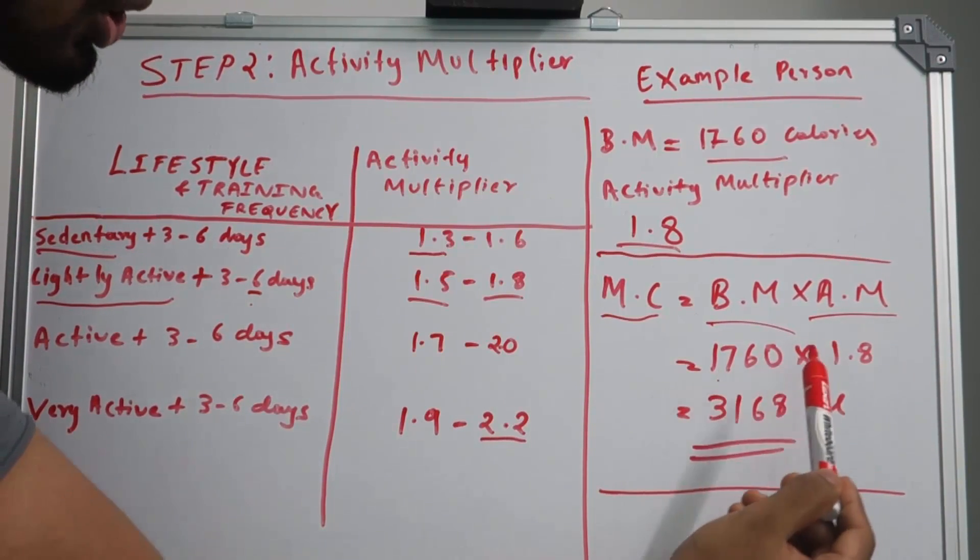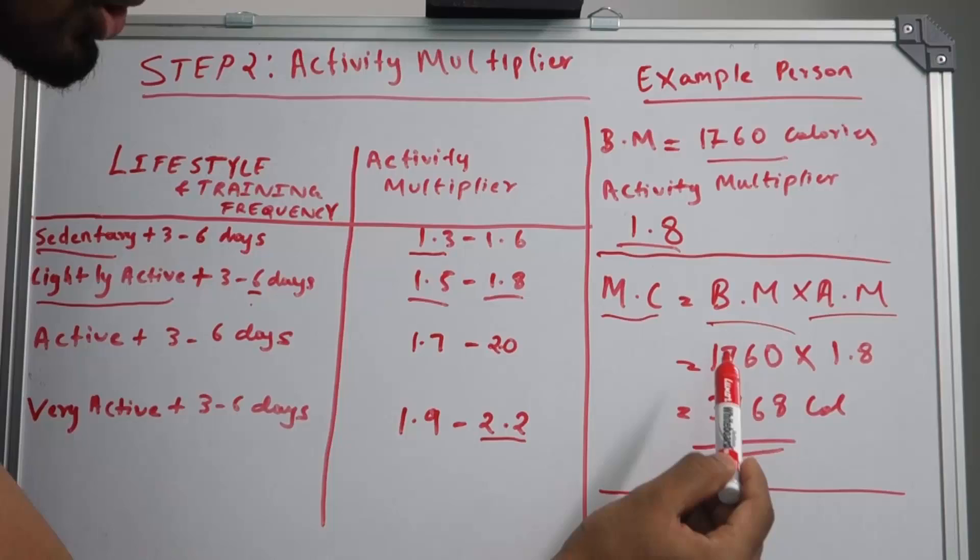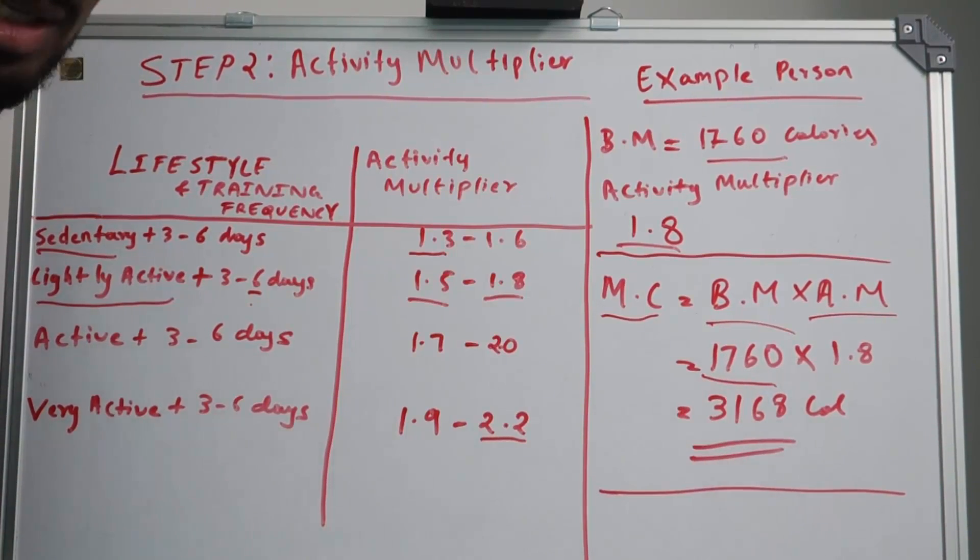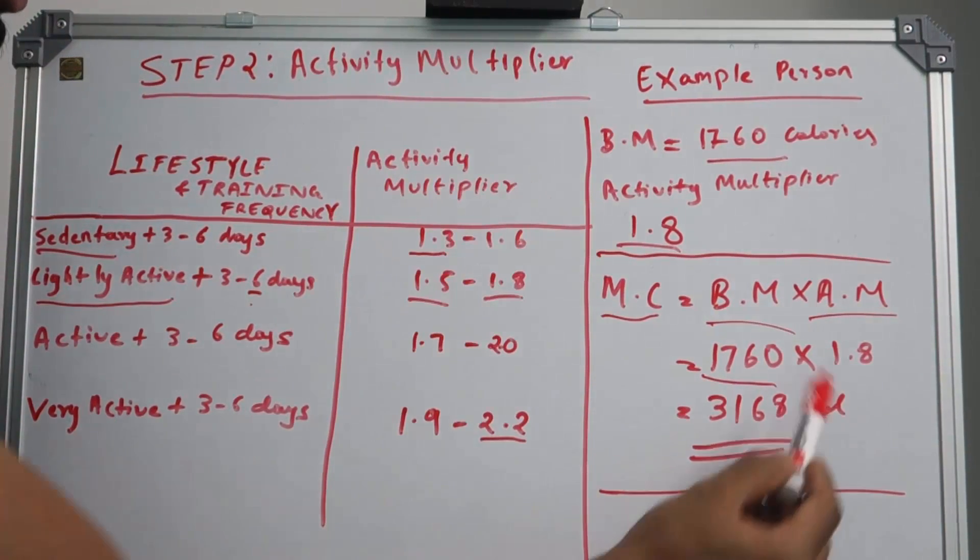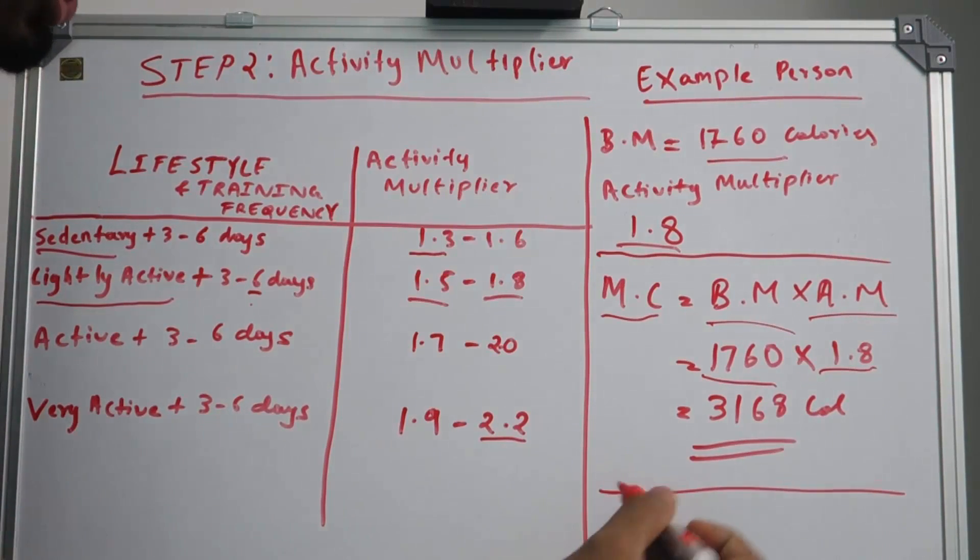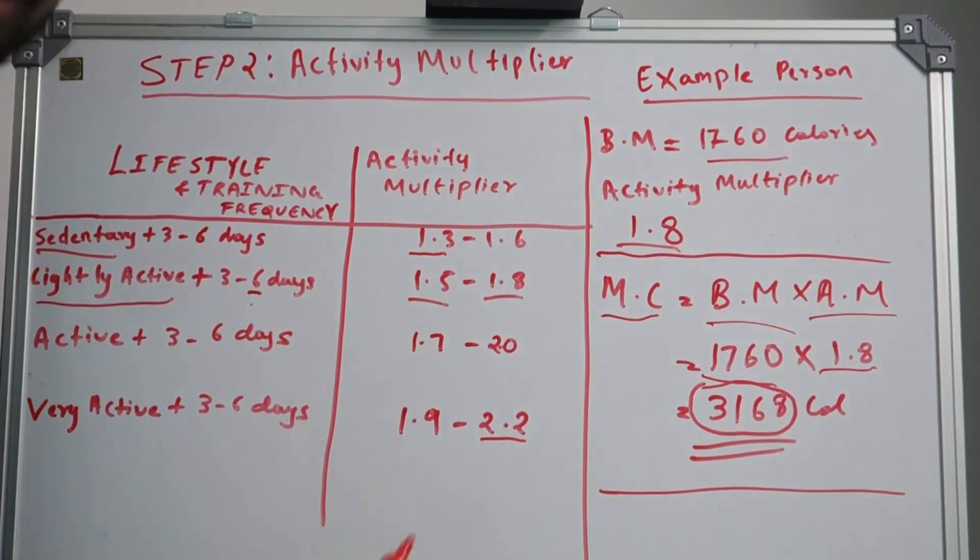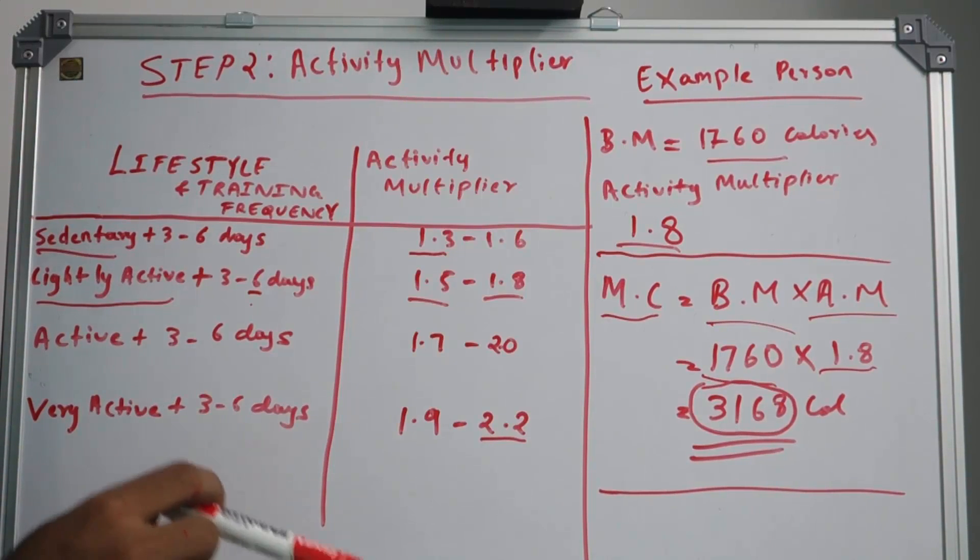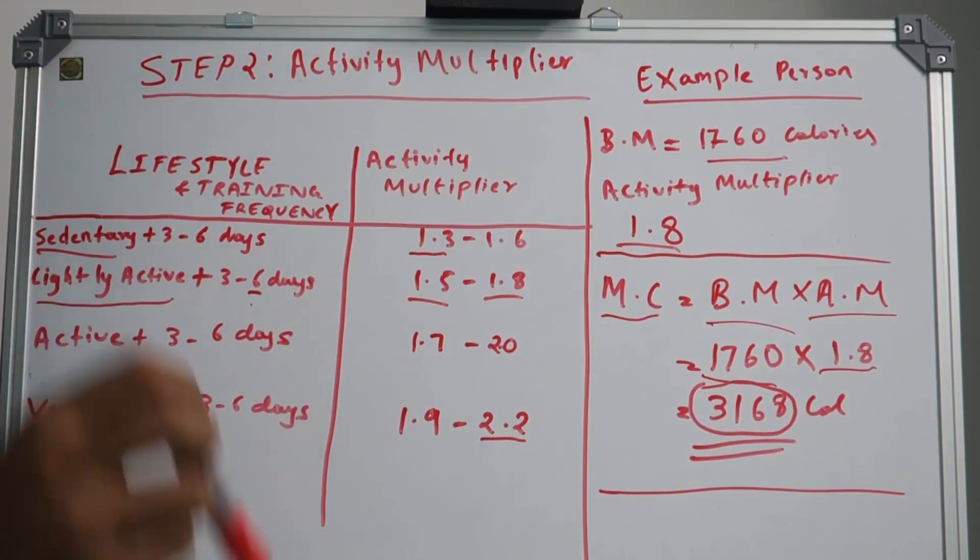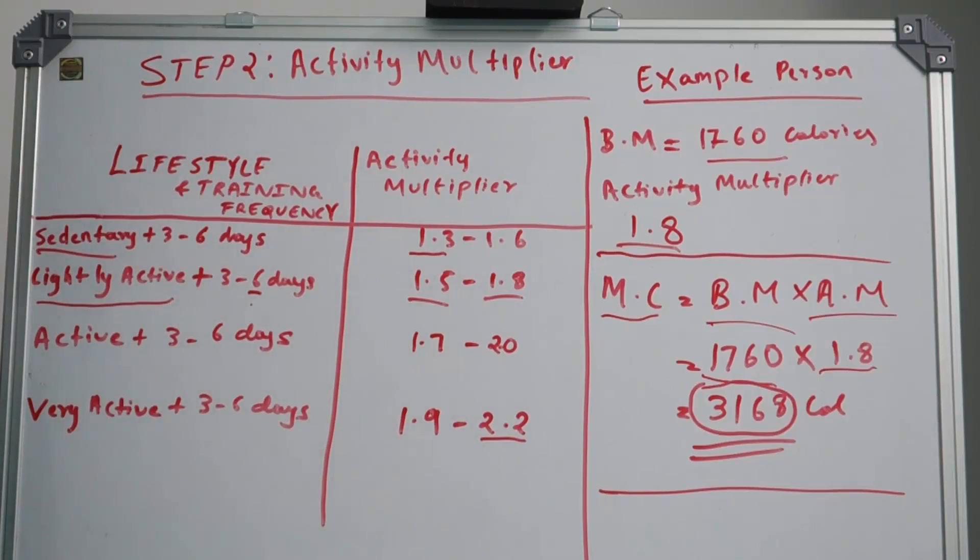Maintenance calories equals baseline multiplier times activity multiplier, which is 1760 times 1.8. This is the baseline multiplier not accounting for any activity, and this is your activity multiplier. Your total calorie requirement for the day comes to around 3168 calories. This is the calories your body requires to maintain your current weight.